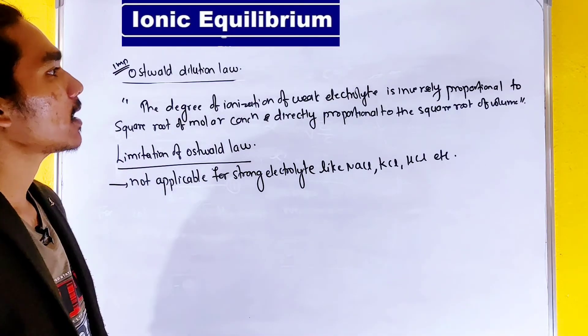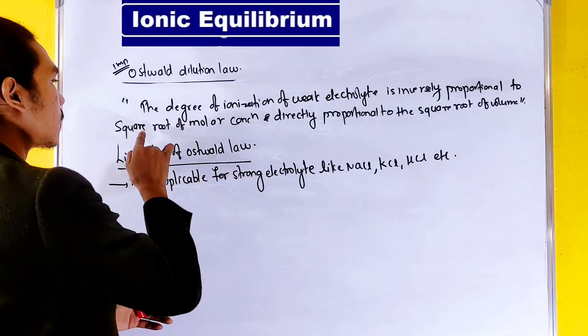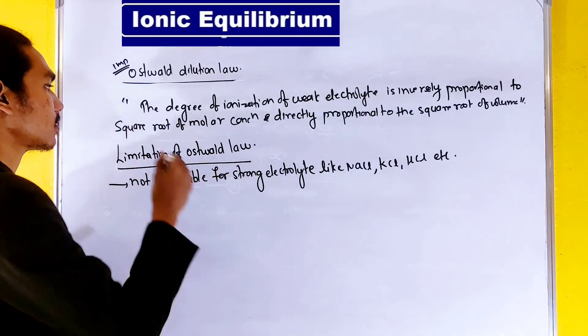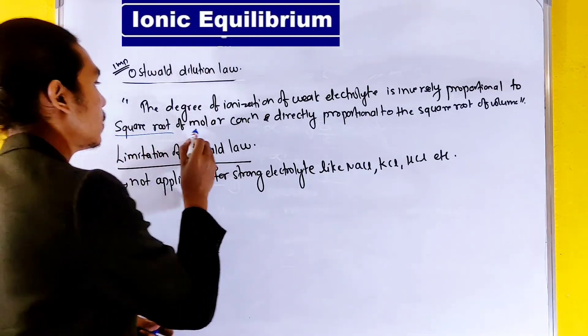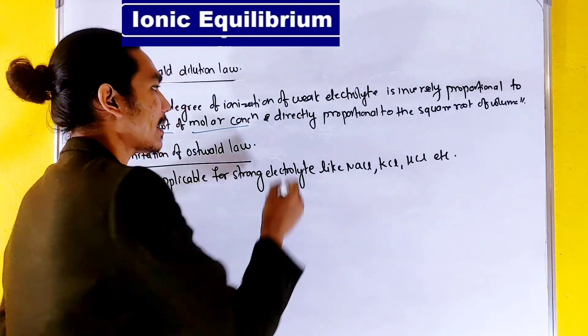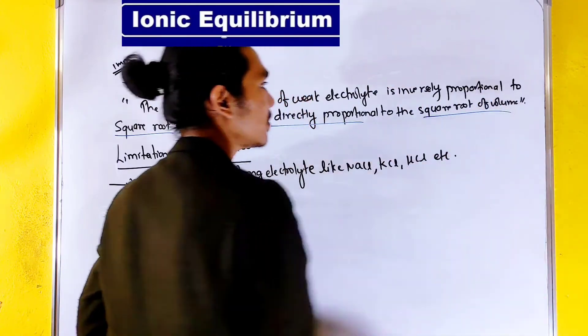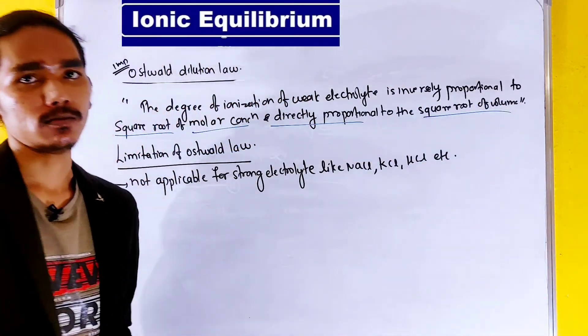The degree of ionization of a weak electrolyte is inversely proportional to the square root of molar concentration, and directly proportional to the square root of its volume.